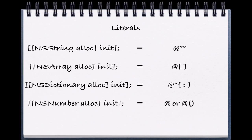For an array, all we need is the at-sign with two brackets, as opposed to having to write NSArray, alloc, and init. We also have one for NSDictionary as well — at-sign with curly braces — and notice the colon in the middle.